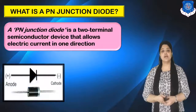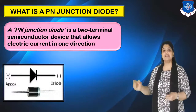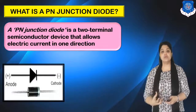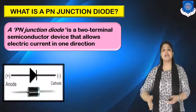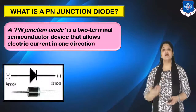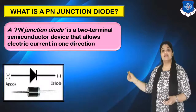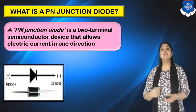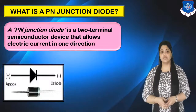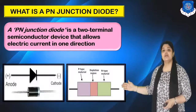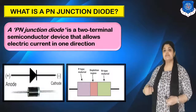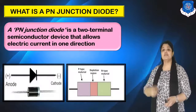Let's see how a PN junction diode looks. In the diagram, you can see the basic schematic symbol represented by a triangle and a vertical line. The triangle represents the anode — the positive terminal — and the vertical line represents the cathode or negative terminal. Practically, a PN junction diode looks like a small cylinder with a silver colored ring indicating the cathode and the black portion indicating the anode. A PN junction diode has a P type material as anode, an N type material as cathode, and a depletion layer in between them.